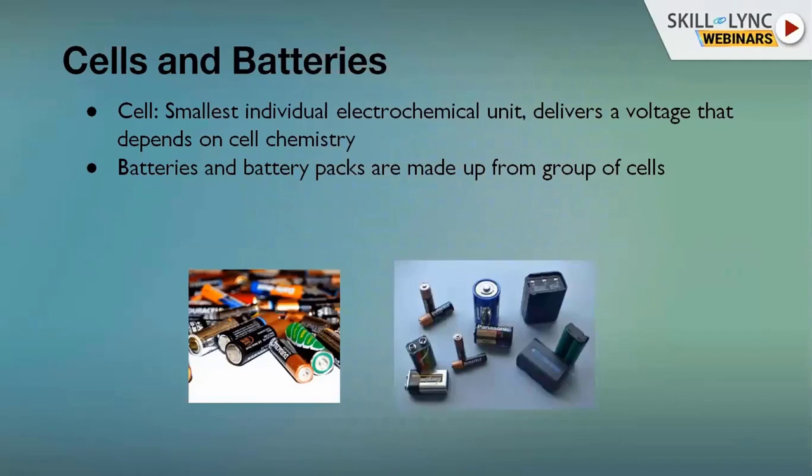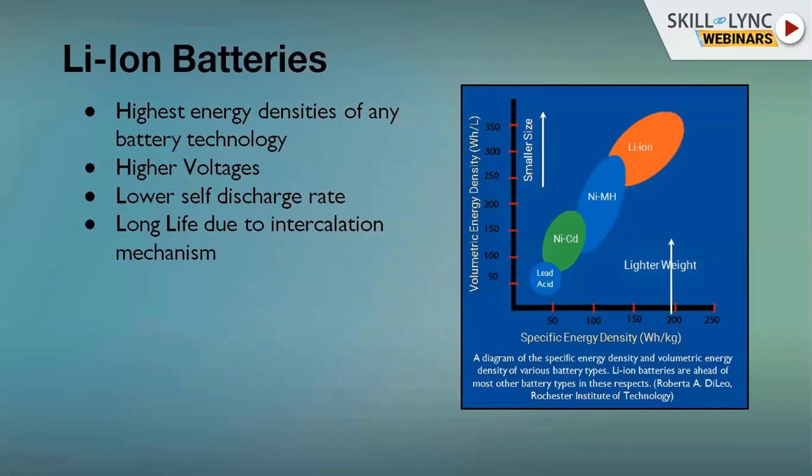Cells are the smallest individual chemical unit of a complete battery pack, delivering a voltage that depends on the cell chemistry. A battery or battery pack is made up of a group of cells connected in series and parallel combinations. The individual cell has its own voltage, and a battery pack holds a series of cells, adding up all the cell voltages to make the total pack voltage.